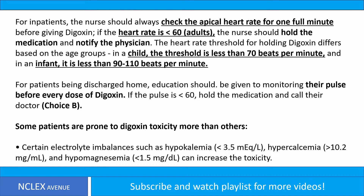The heart rate threshold for holding digoxin differs based on age groups. In a child, the threshold is less than 70 beats per minute, and in an infant, it is less than 90 to 110 beats per minute. For patients being discharged home, education should be given to monitor their pulse before every dose of digoxin. If the pulse is less than 60, hold the medication and call their doctor — choice B.